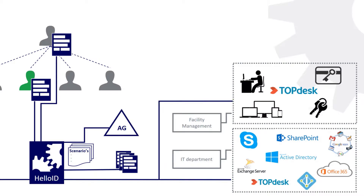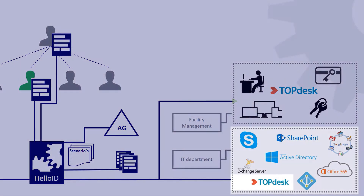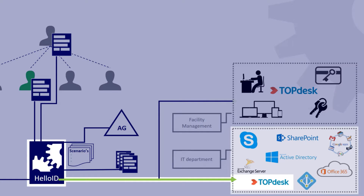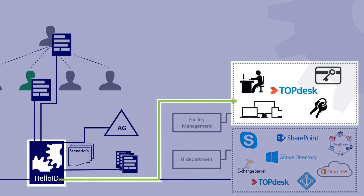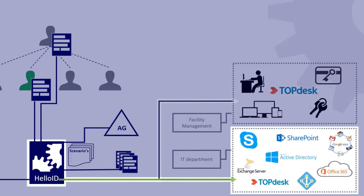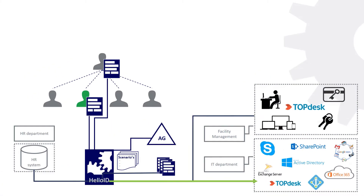Here is the third flow: the creation of user accounts and cards in Topdesk. This can also be completely automated from HelloID. This boils down to creating tickets to deliver items or amenities and the creation of user accounts in Topdesk. These flows make onboarding faster and easier.